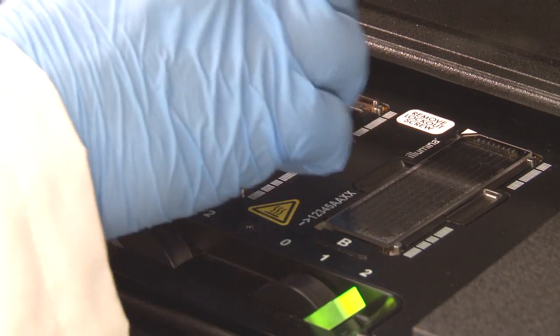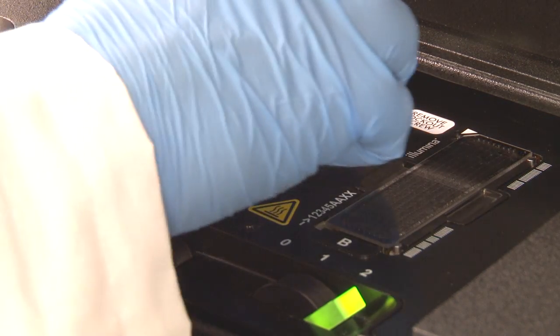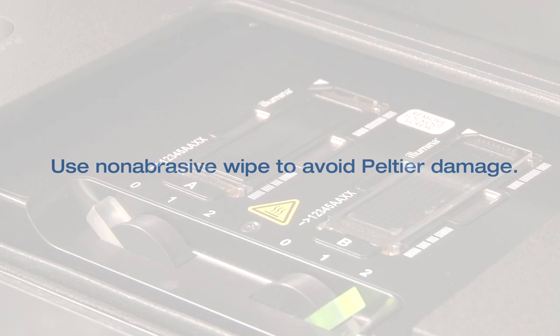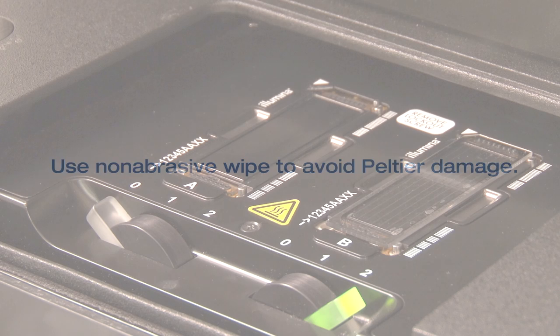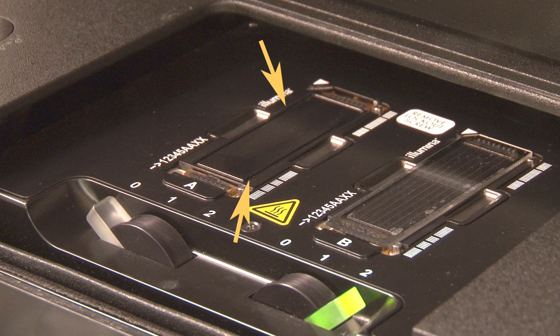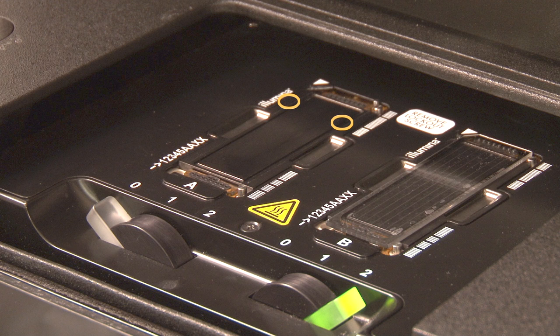It is important to clean the stage before each run with ethanol or isopropyl alcohol. Be sure to use a non-abrasive wipe, as the Peltier plates are optically flat and must not be chipped or damaged. Also, inspect the ridges around the flow cell and the vacuum holes to ensure that they are free of any debris.